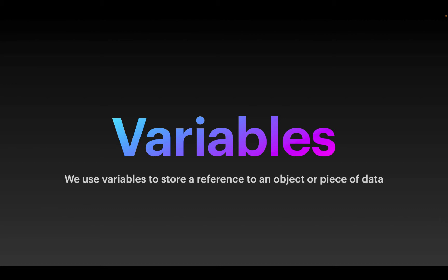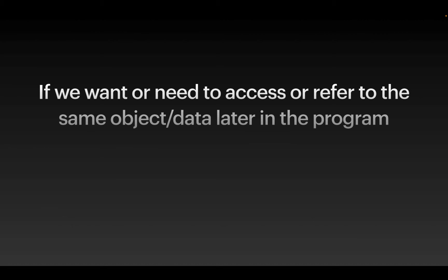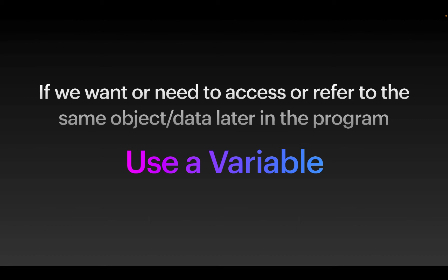Variables are a way that we store information — this is how we're able to keep track of a piece of data in our project. If we want or need to access the same piece of information later on in a program, it's better to store it in a variable. When we do that, we can just change that variable once, and when we read through the code, we know what that item is referring to, making things easier as our programs grow in complexity.